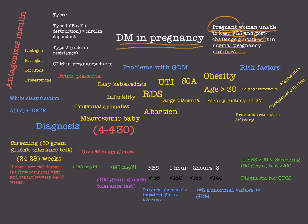There are three types of DM in pregnancy. The first is Type 1 DM, where we have beta cell destruction — the beta cells of the pancreas that secrete insulin are destroyed. The second is Type 2 DM, which involves insulin resistance, where we have normal insulin secretion but a lot of resistance to insulin.